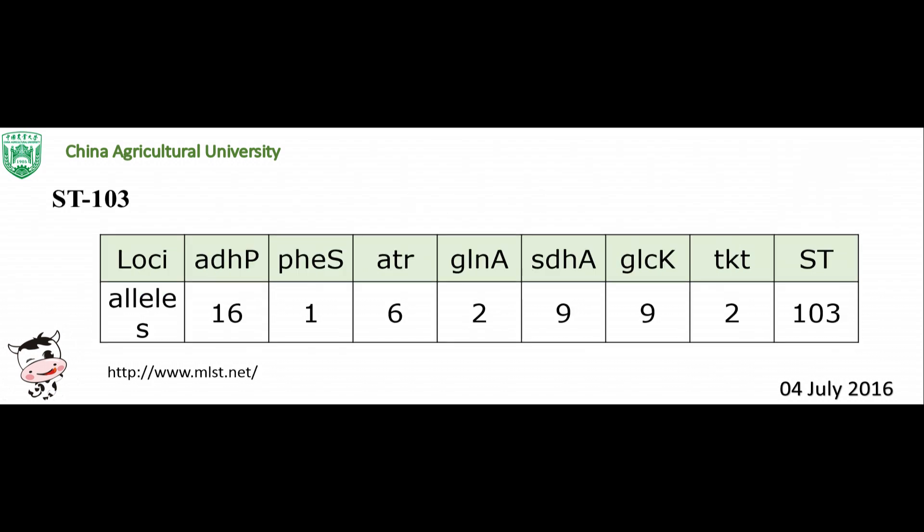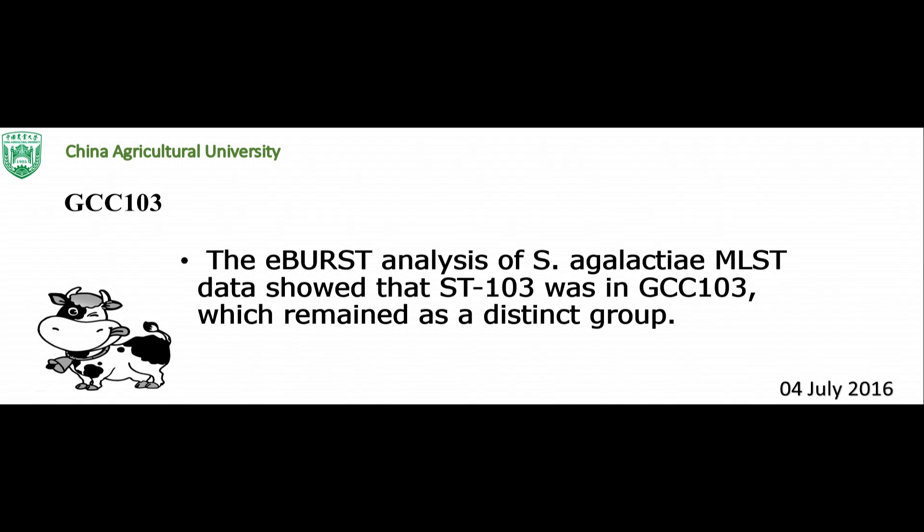After sequencing all seven loci for each strain against the database, the allelic profile of all 23 Streptococcus agalactiae isolates is 16, 1, 6, 2, 9, 9, and 2. Combining the alleles at the seven loci provides sequence type ST103. The eBURST analysis of Streptococcus agalactiae MLST data showed that ST103 was in clonal complex CC103, and CC103 remained as a distinct group.